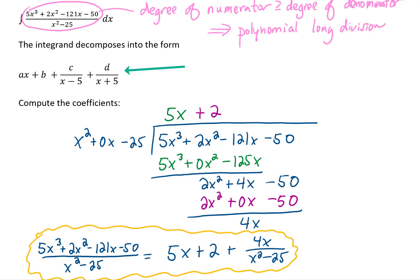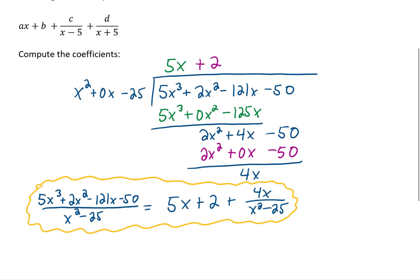Now, notice that we've started to answer the question. The problem says the integrand decomposes into the form, and it starts with ax plus b. Well, we have our ax plus b right here. So our a is 5, and our b is 2. We have that so far. Now, we need to further break down this last term.